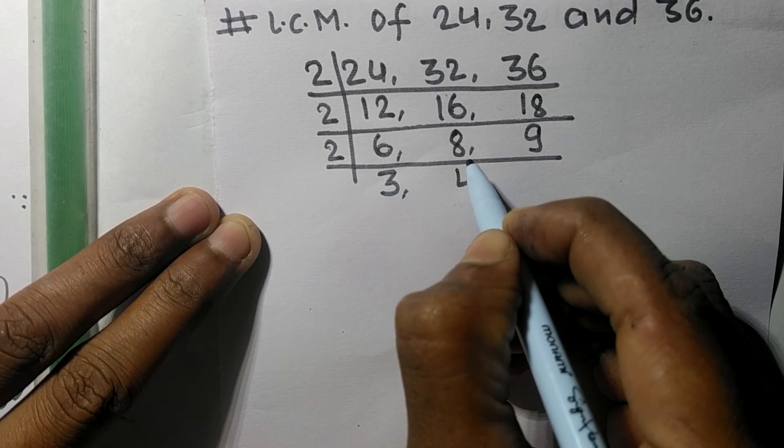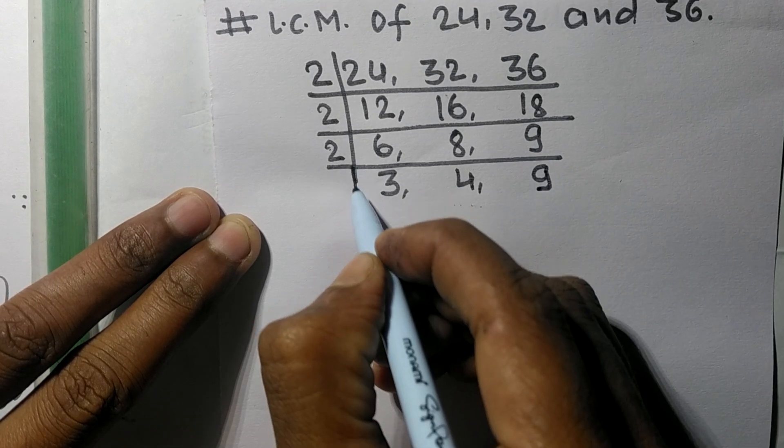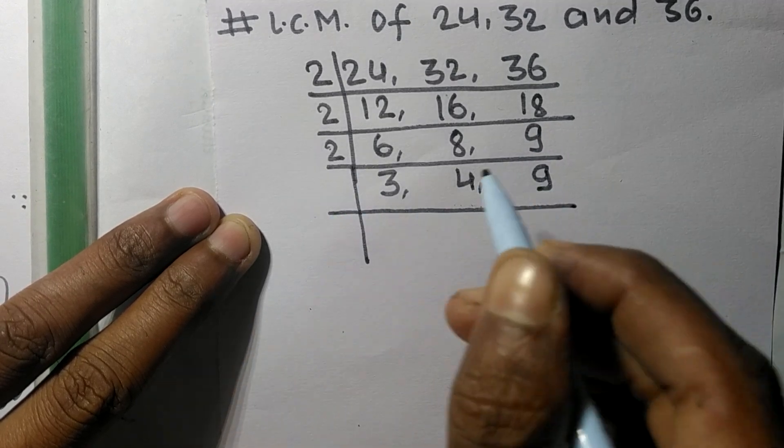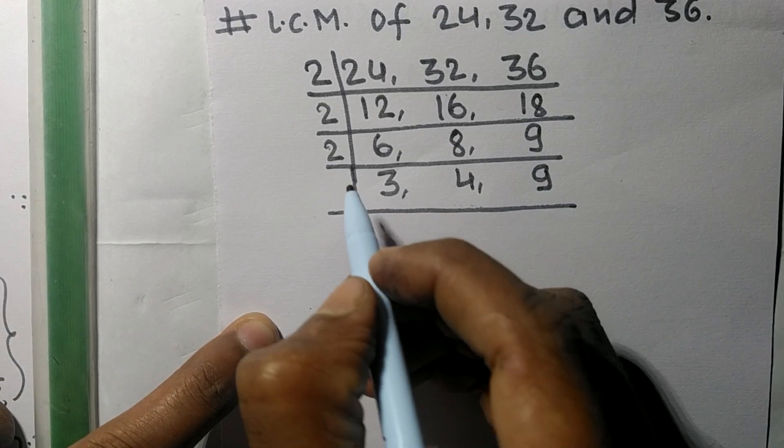So now these 3 and 9 are divisible by 3. So 3 times 1 means 3, 4 is not divisible so it is the same, 3 times 3 means 9.